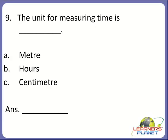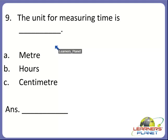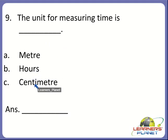Now the next one. The unit for measuring time is dash. We studied about this in the lesson. There were three measuring units for time. They were seconds, minutes, and hours. So the unit for measuring time is hours. So B is the correct answer.